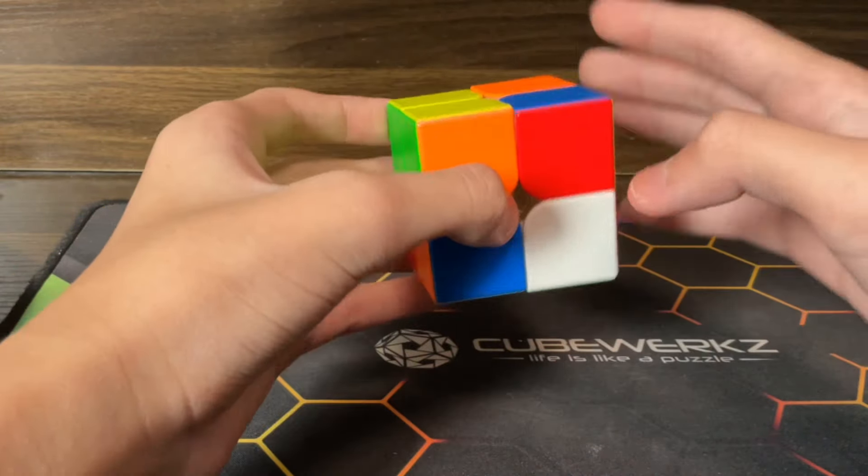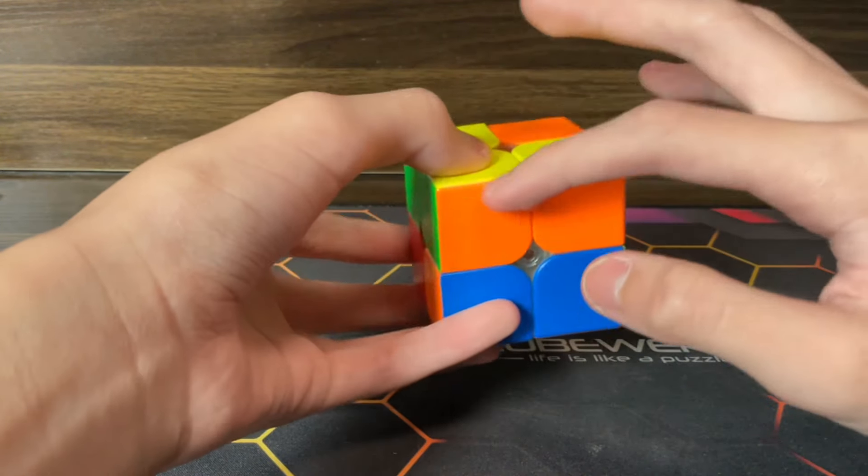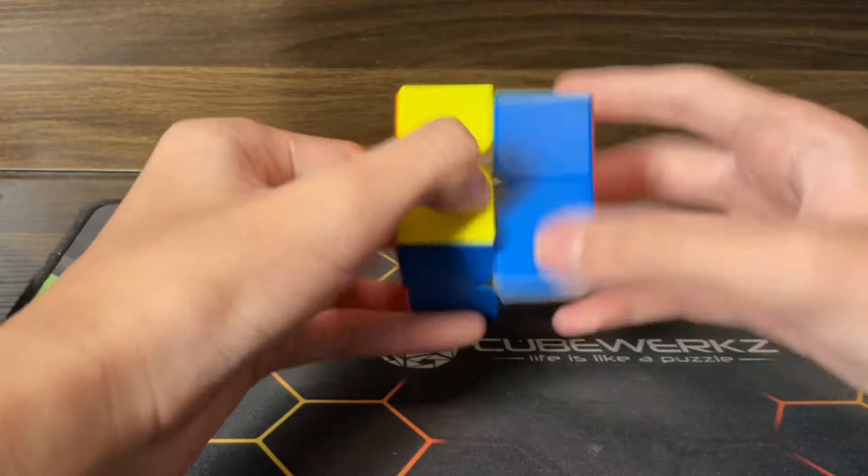What's optimal on this scramble is on white you do one move into this EG2 LS which is nice from this angle and you do F prime R U R prime F2 R F prime R prime.